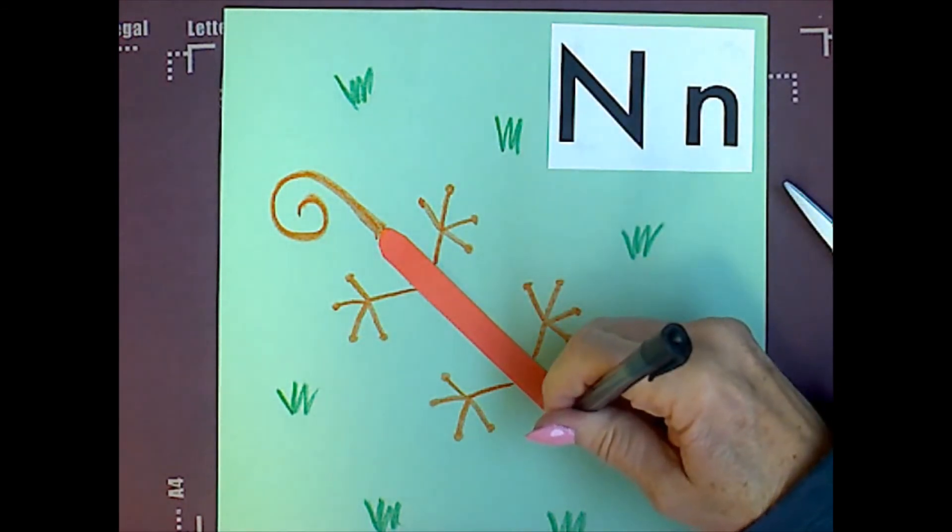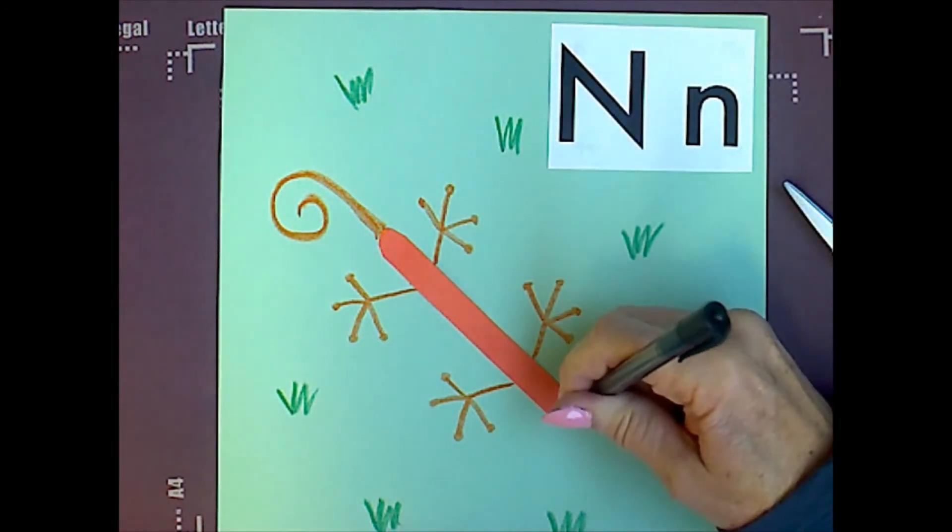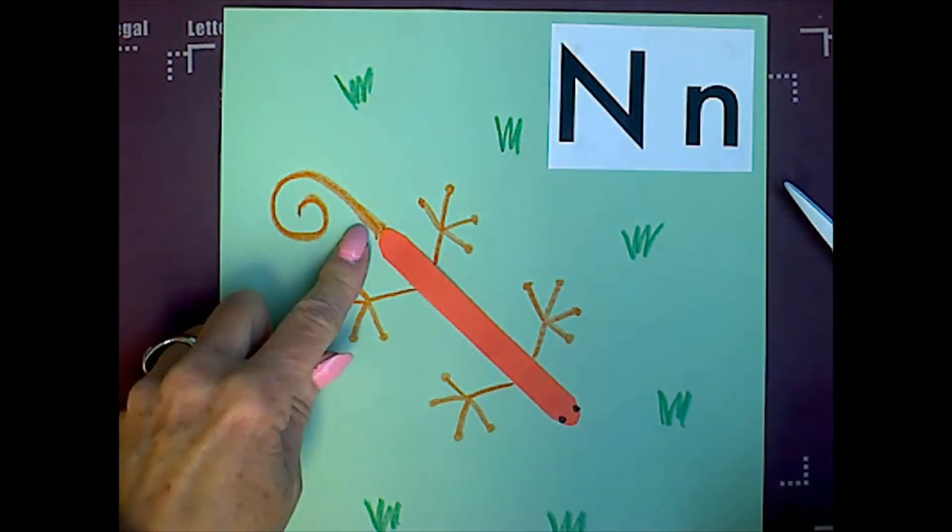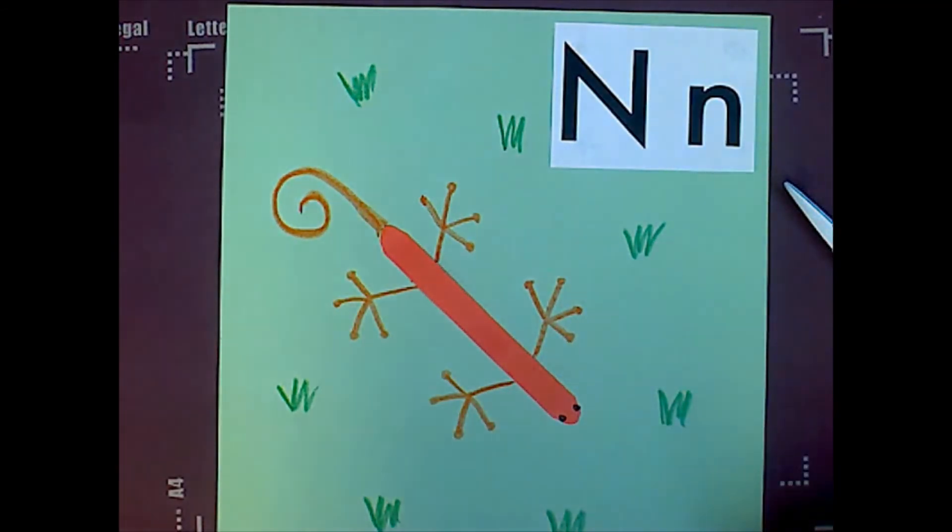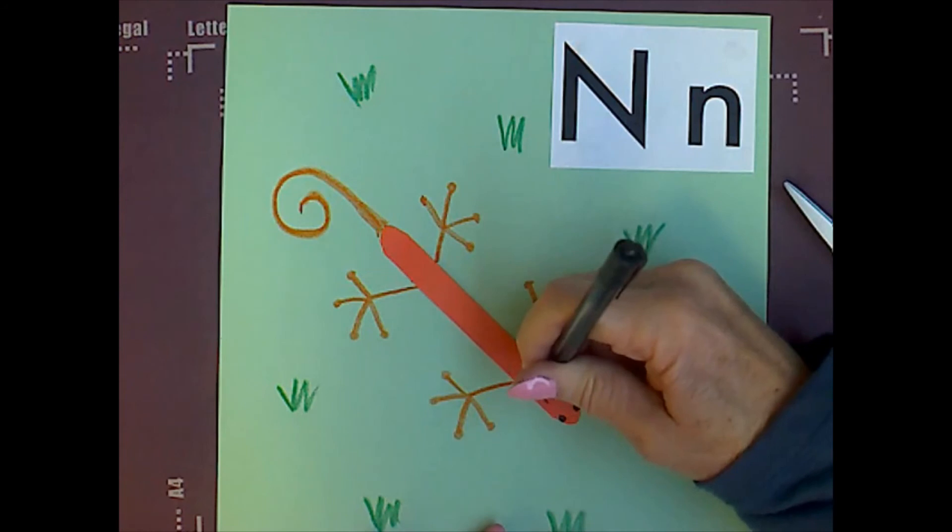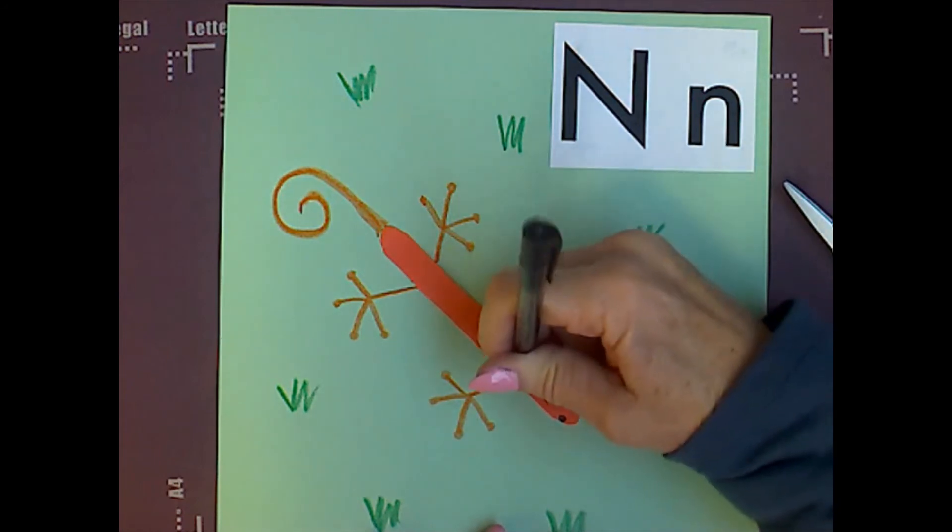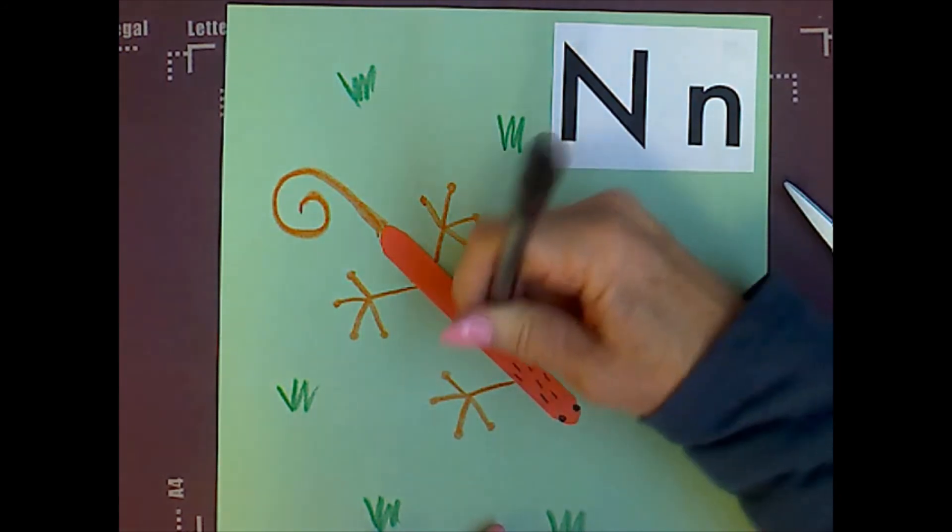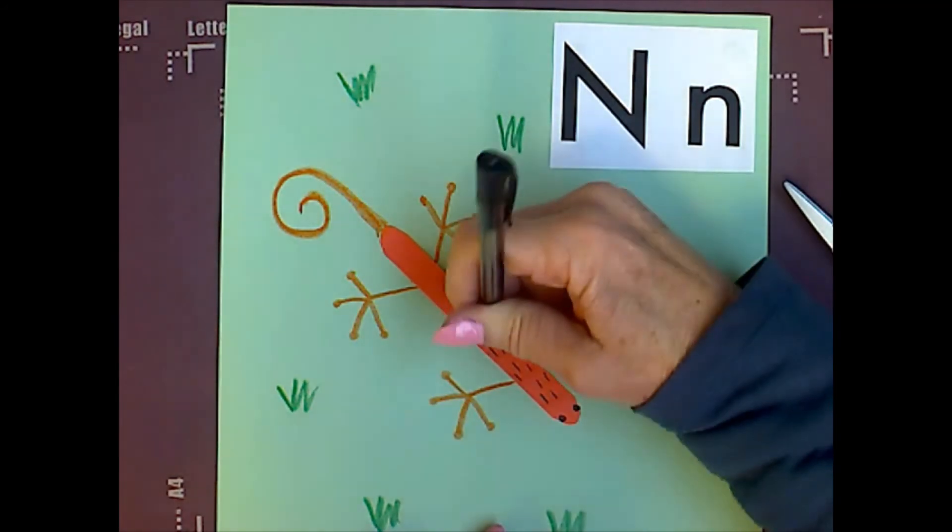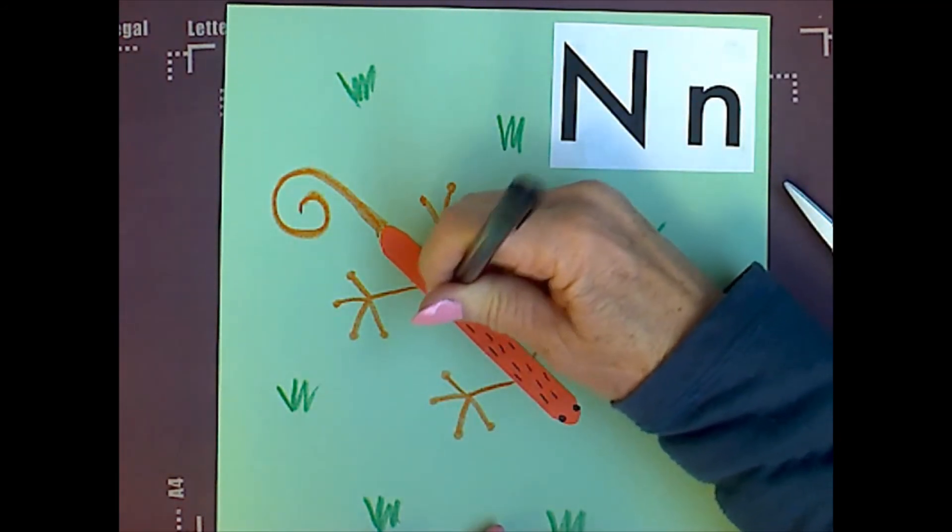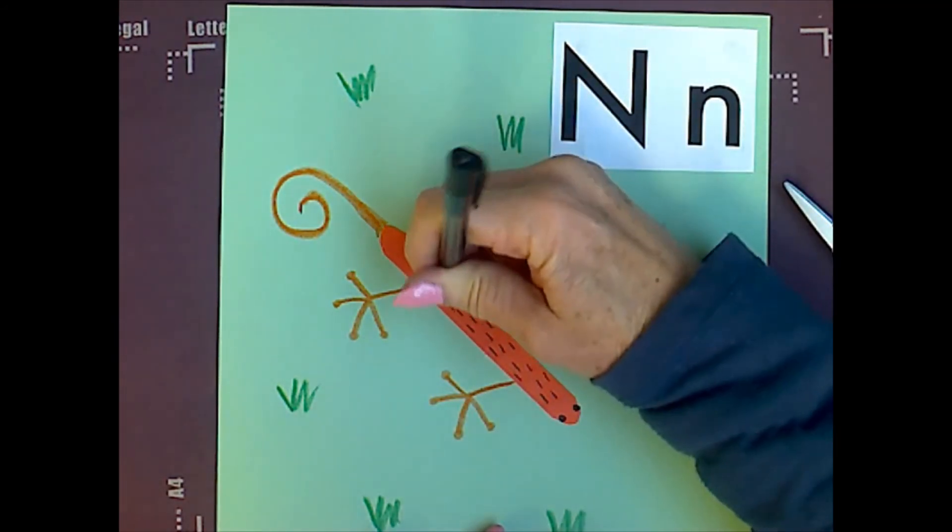So, we're going to start off by putting two eyes at the opposite end of the tail because that's where his head is. And then we're going to add a lot of small black lines, kind of randomly, around on the back of your newt.